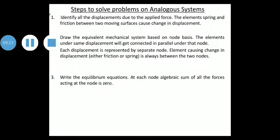What are the steps to solve problems on analogous systems? Step 1: Identify all displacements due to the applied force. Elements like spring and friction between two moving surfaces cause a change in displacement. Step 2: Draw the equivalent mechanical system based on node basis. Elements under the same displacement are connected in parallel under that node. Each displacement is represented by a separate node. The element causing change in displacement — friction or spring — is always between the two nodes. Step 3: Write the equilibrium equation. At each node, the algebraic sum of all forces acting is zero.